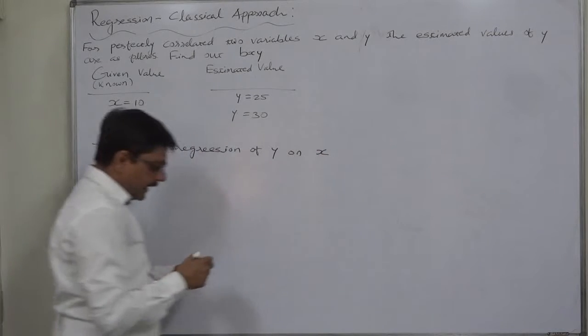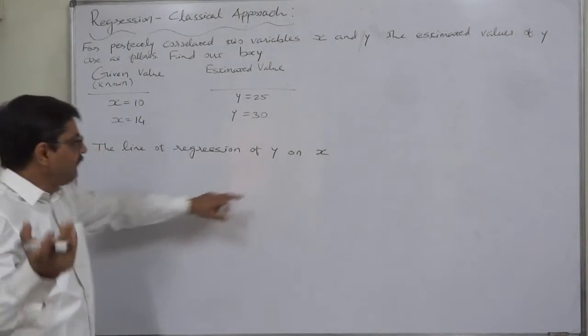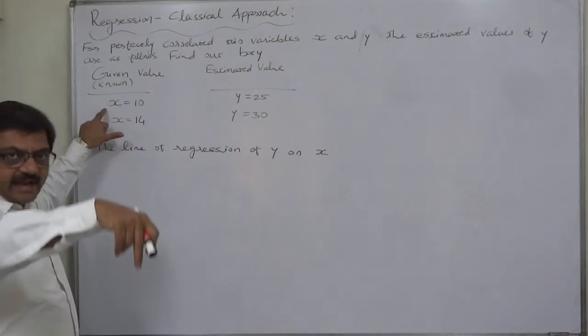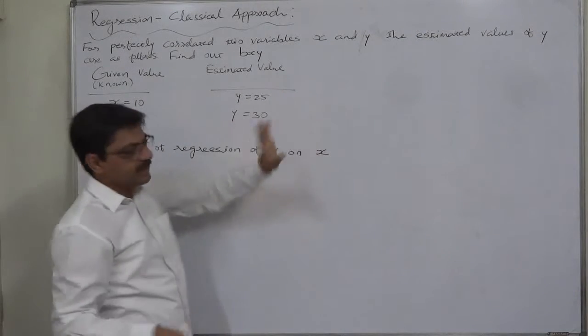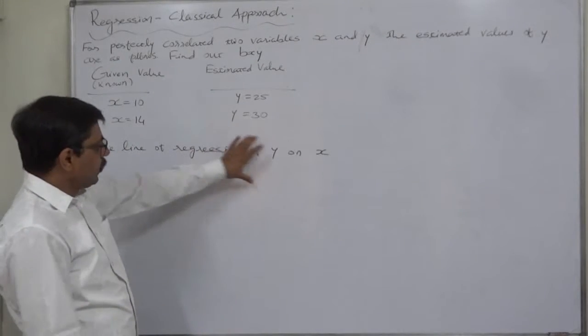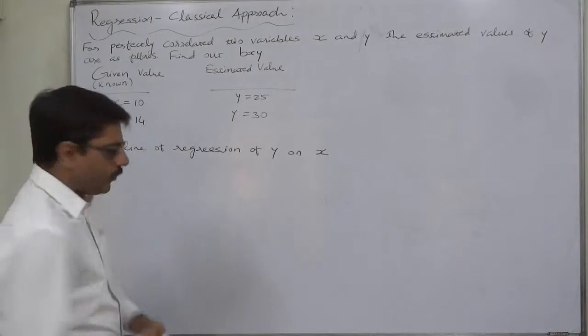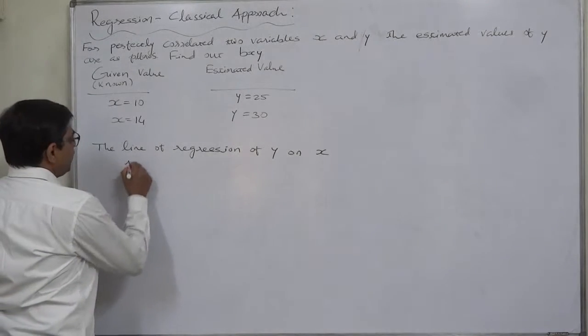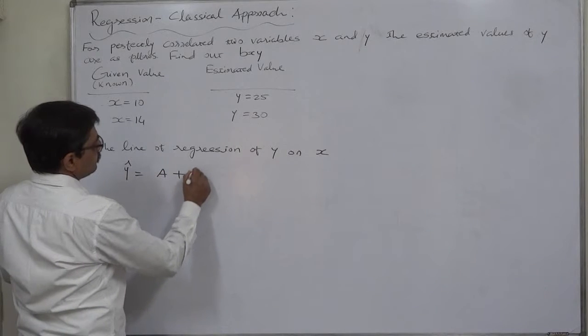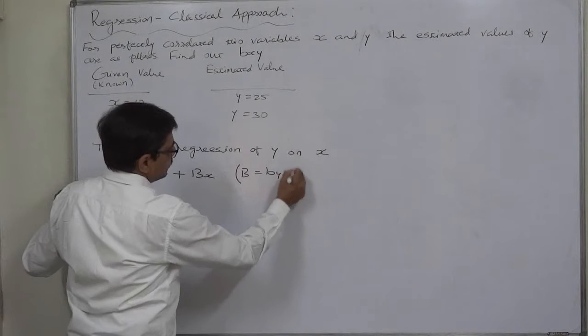If we have the equation of this line of regression and if we substitute the known values of x into them then we can have the estimated values of y. What is the line of regression of y on x in this case? We don't know. But we know its standard form. That is y cap equals to a plus bx. Where b stands for b y x.